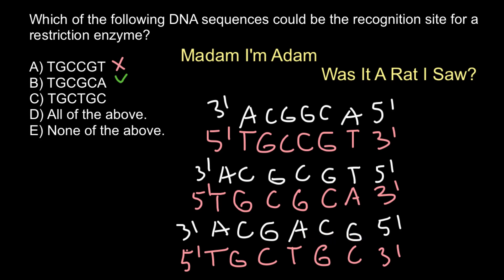This is not a palindromic sequence. So as you can see, the only correct answer is answer B. However, keep in mind that you could also argue for answer D or 'all of the above,' because not necessarily 100% of restriction enzyme recognition sequences have to be palindromic. About 80% of type 2 restriction enzyme sequences are palindromic and about 20% are not, so technically any sequence could be a recognition site — but most likely it will be palindromic. The correct answer is B.